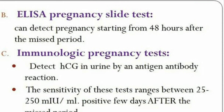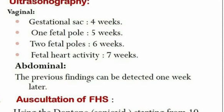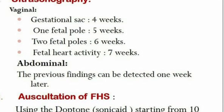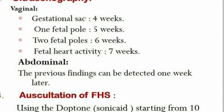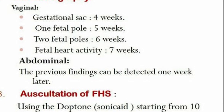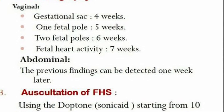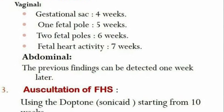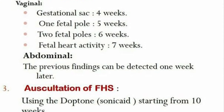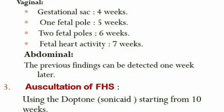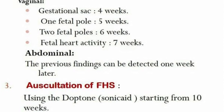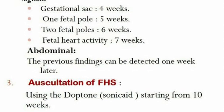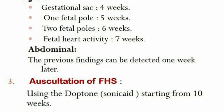Ultrasonography is a very common investigation for diagnosing pregnancy. There are two types: vaginal and abdominal. For vaginal ultrasound, the gestational sac can be detected as early as four weeks, the fetal pole at five weeks, fetal pulsation at six weeks, and fetal heart activity at seven weeks. For abdominal ultrasound, the above findings can be detected only one week later.